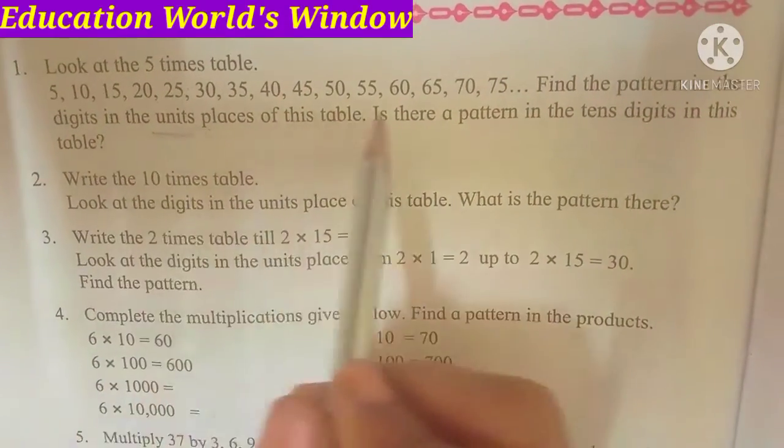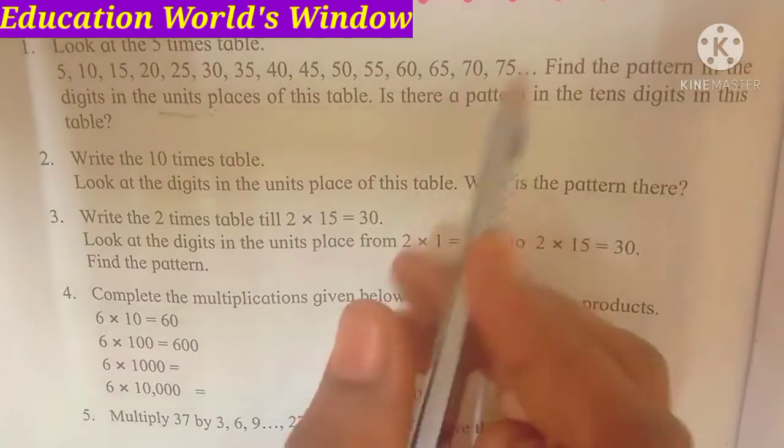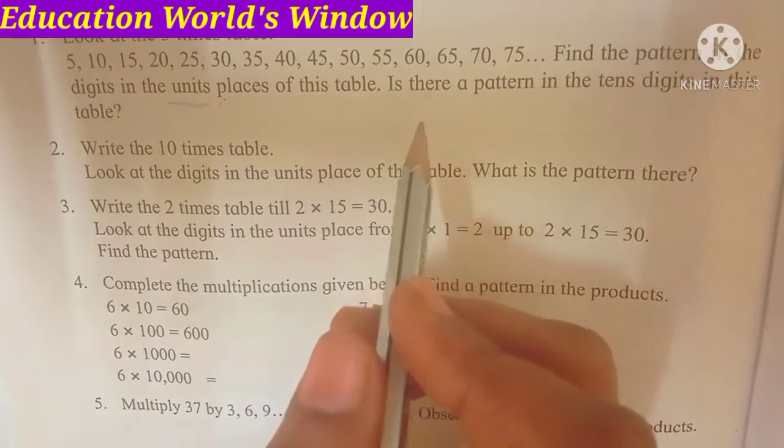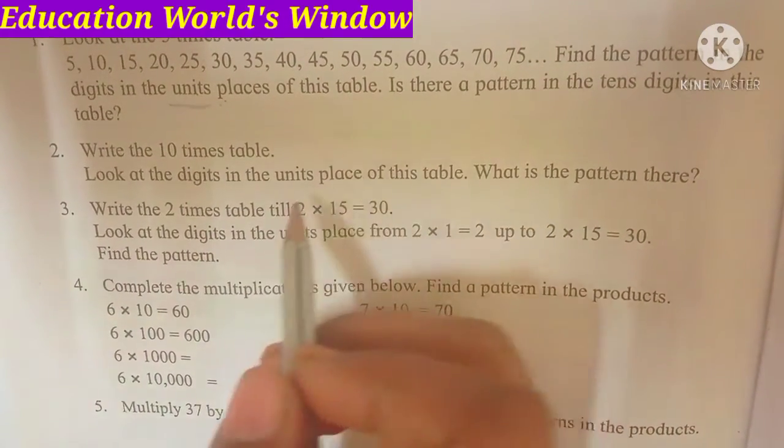I have a pattern of units in place: numbers like 0, 5, 0, 5. So what are the patterns of tens? I have a pattern of units in place and tens in place. What is the pattern of units in place?